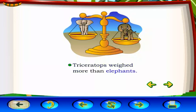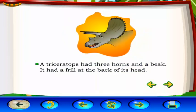Triceratops weighed more than elephants. A Triceratops had three horns and a beak. It had a frill at the back of its head.